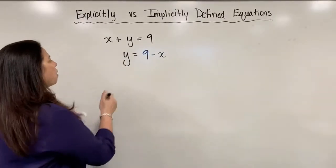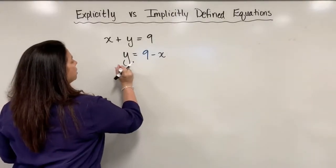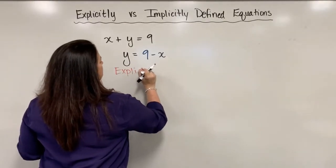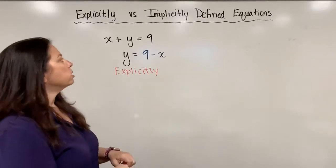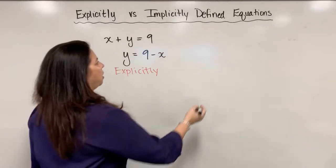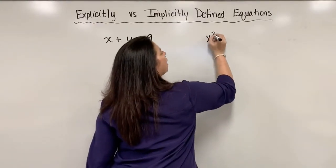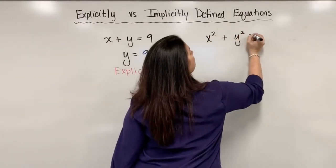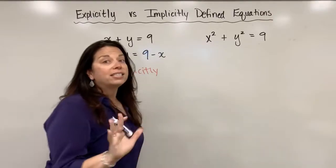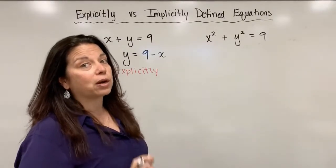So this is what we would consider an explicitly defined equation. But let's look at an implicitly defined equation similar to this one. What if we have x squared plus y squared equals nine? All I did was square the x and square the y.